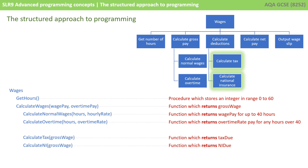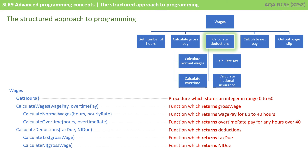In a similar way, both calculate tax and calculate national insurance will be functions. They each take in the gross amount of wage, perform a calculation, and return respectively the amount of tax and the amount of national insurance due. Both of those return values would then get passed in as parameters to calculate deduction, which would return the total deductions.